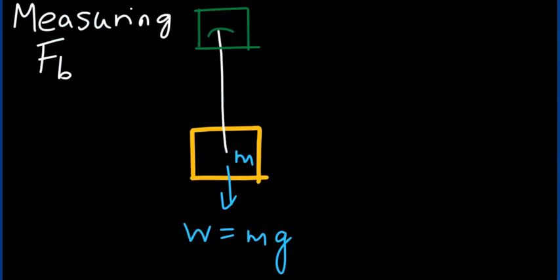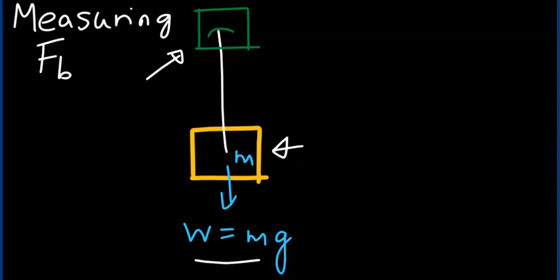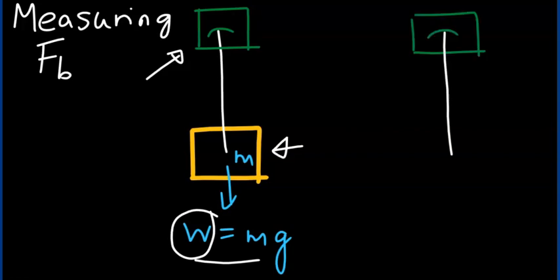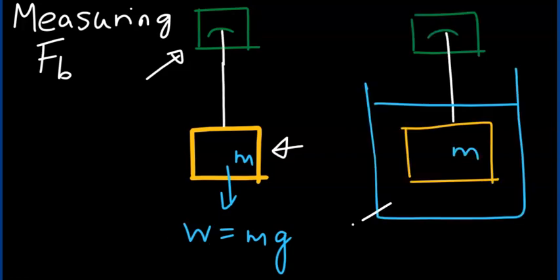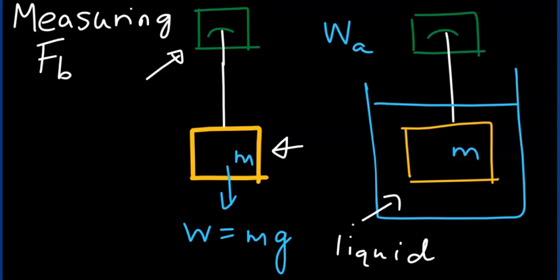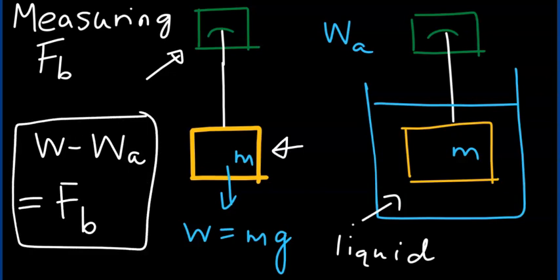We can measure the buoyant force in the laboratory as follows. You hang a mass from a scale and read the true weight W. Next, you hang the same object in a liquid, and the reading on the scale will be the apparent weight, or the weight of the object in that liquid. By taking the difference — the true weight minus the apparent weight — you can calculate the buoyant force on the object inside that liquid.